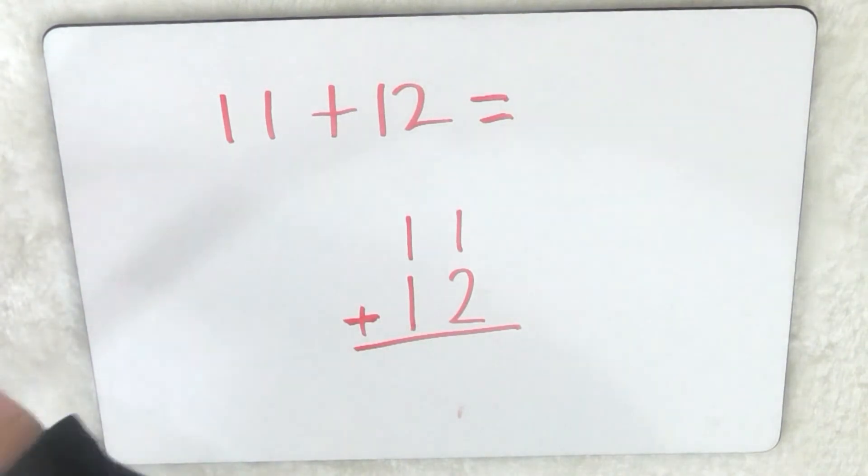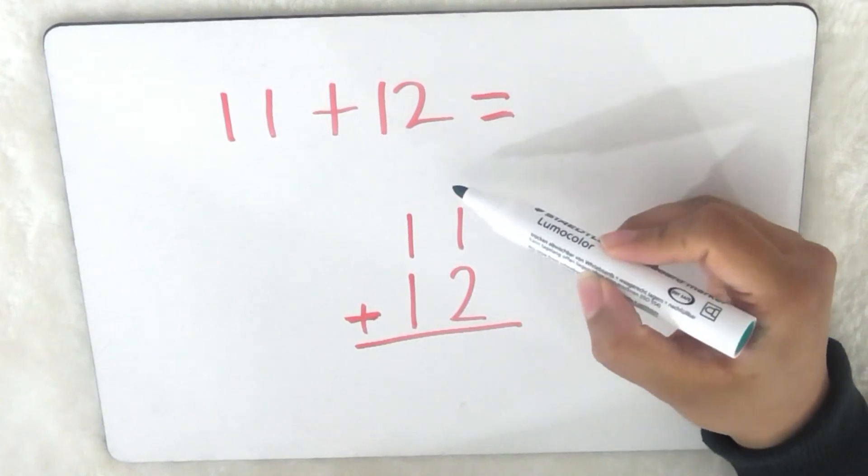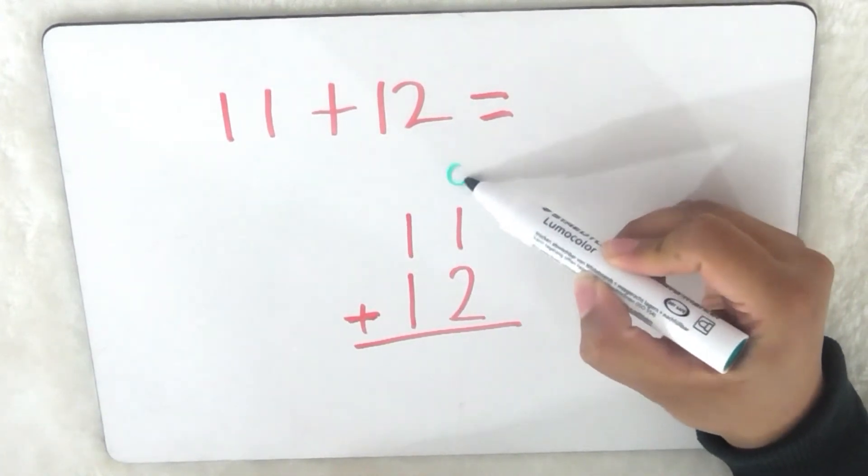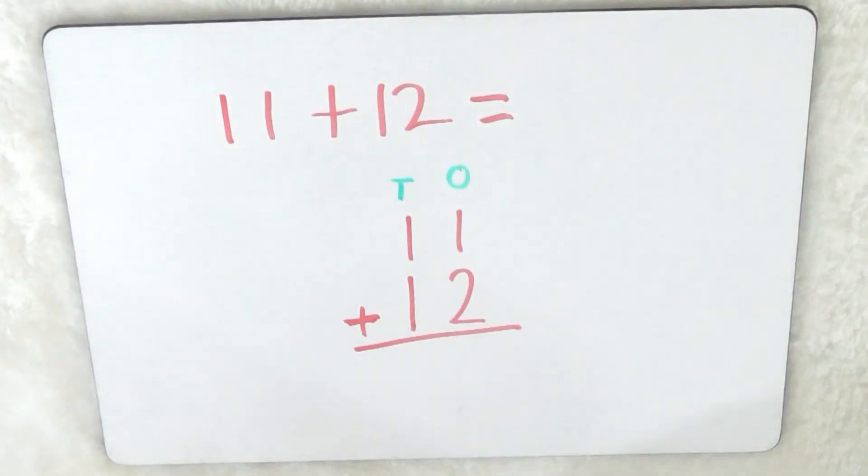So for the purpose of this video I'm going to label what the ones are and what the tens are to help you. O means ones and T means tens, so now that's labelled I can show you how to work it out.